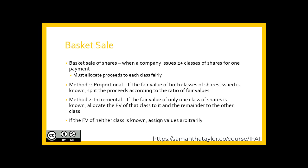It's possible that we may issue more than one type of share for the same payment—for example, common shares with some preferred shares. There are two methods to record this: proportional and incremental. Under proportional, if the fair value of both classes is known, we split accordingly based on a ratio of what each is worth. Under incremental, if we don't know the value of one class, we allocate to the known class first and the remainder to the other.